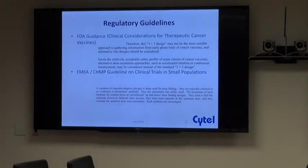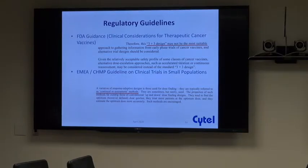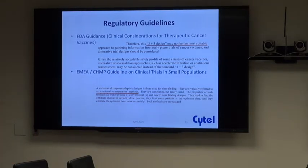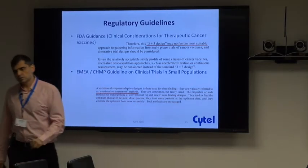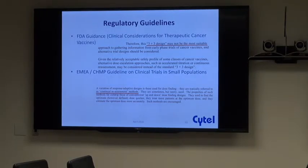A lot of people have taken notice — from the statistical community and from regulators, both in the US and Europe. Different guidances have mentioned that the three-plus-three design may not be the most suitable for gathering information. In Europe they've gone further, saying you should take notice of continual reassessment methods because they find the dose quicker, treat more subjects at the optimum dose, and estimate the optimum dose more accurately. Such methods are encouraged.